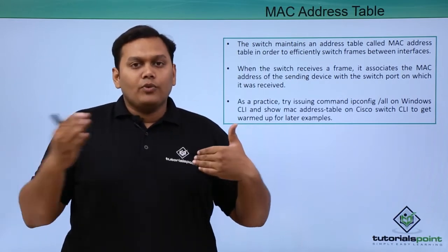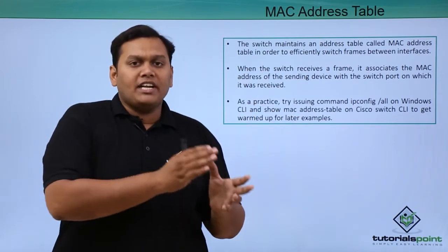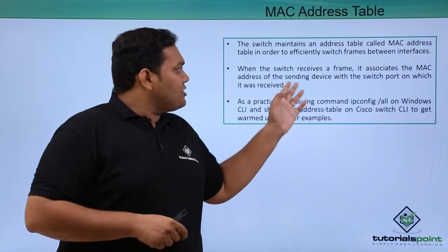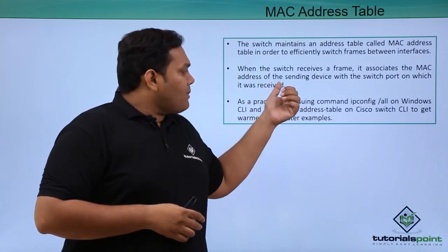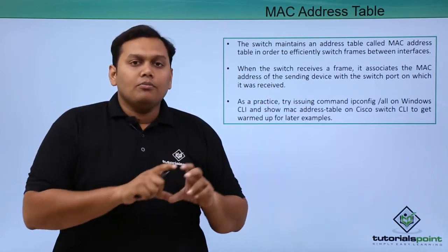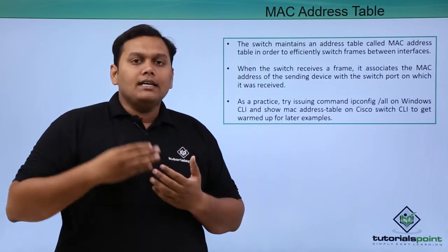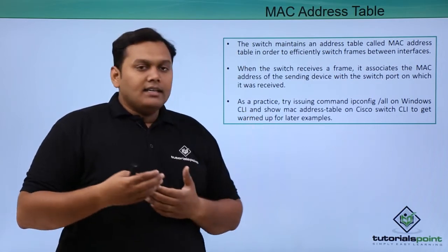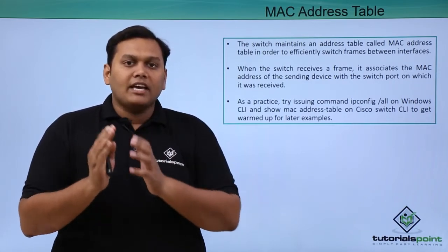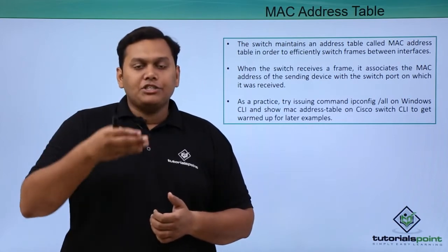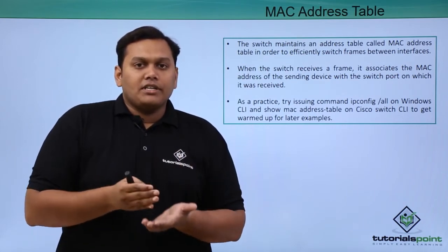From interface to interface, when the data packet is transferred, the switch efficiently switches frames from one interface to another. When the switch receives a frame, it associates MAC addresses by the information and forwards the packet to the next hop. As a practice, if you want to know what MAC addresses are available in a Windows system, type the command ipconfig /all to get all the MAC addresses associated with it.